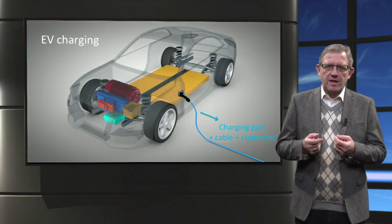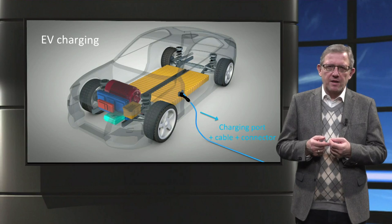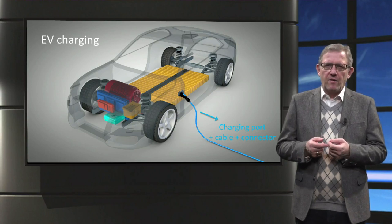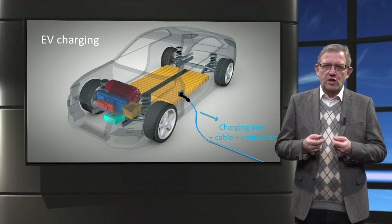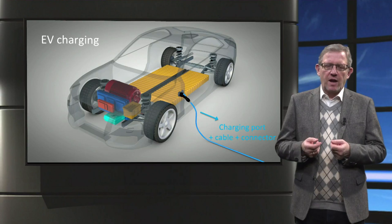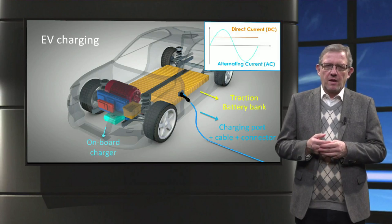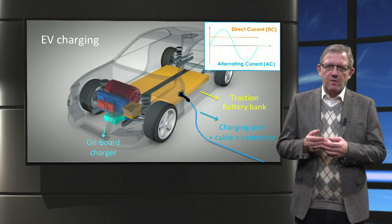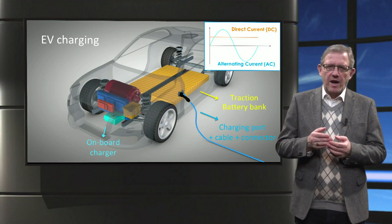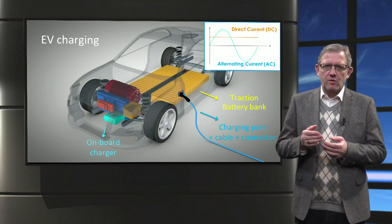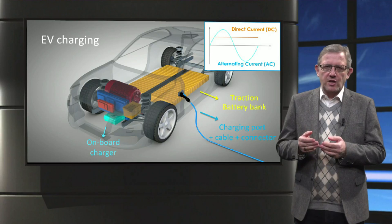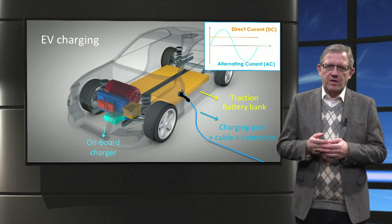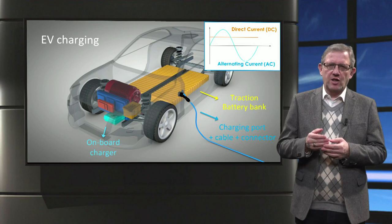To charge an electric vehicle, AC power from the electricity grid is fed to the car via the vehicle inlet using the charging cable and connector. The onboard charger, which is an AC to DC power converter, converts the AC power to DC power suitable for charging the battery. What we have seen till now is referred to as AC charging.